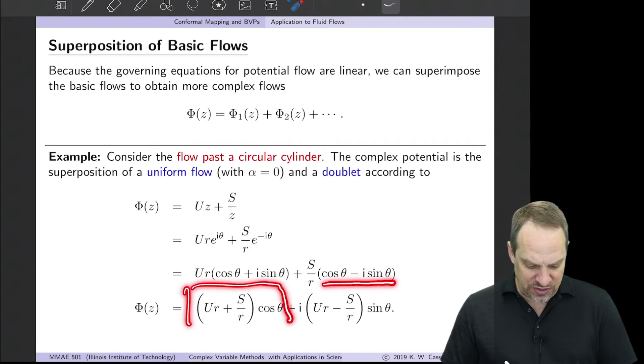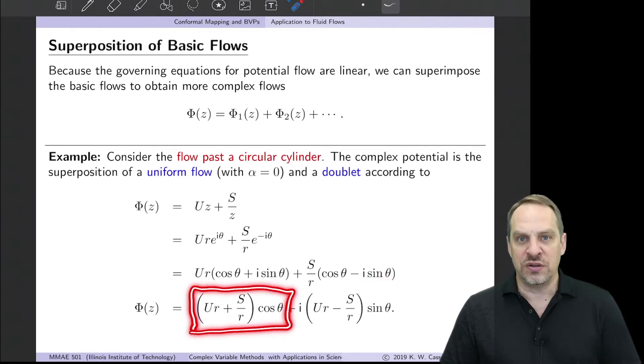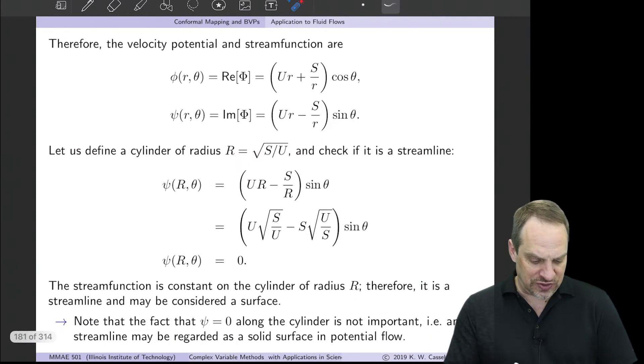Collect the real parts together and collect the imaginary parts together. This is real, this is real, this is imaginary, and this is imaginary. So this becomes our φ, our velocity potential, and this becomes an expression for our stream function ψ. So you see those here, φ and ψ.